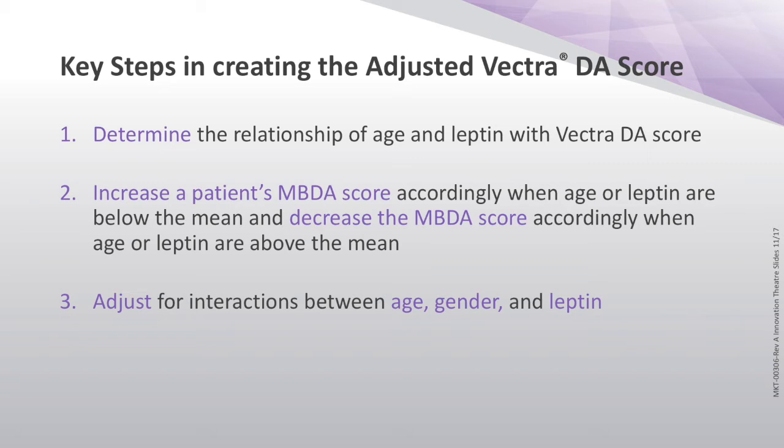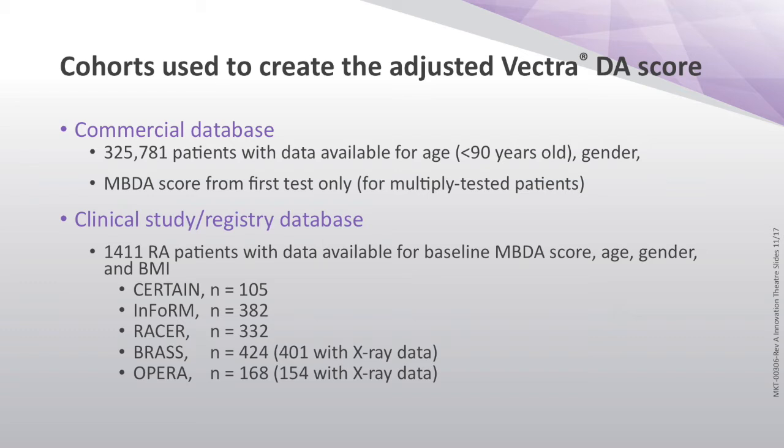So in patients with MBDA scores that were at the extremes of age or the extremes of obesity, the adjustment would tend to lower the score. And in people who were at the other end, it would tend to raise it. I'll show you how this would look.